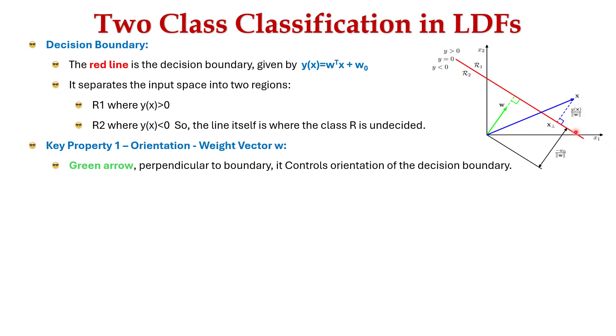Next, the first key property is orientation, which is based on weight vector w. Here the green arrow, perpendicular to the boundary, controls the orientation of the decision boundary. The next key property is location, based on the bias term w₀. It shifts the red boundary line left or right, with position given by -w₀/||w||.